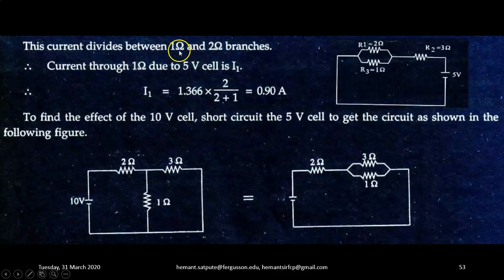Now this current divides between 1 ohm and 2 ohm branches. This parallel combination is in series with this. So current through 1 ohm due to 5 volt cell will be I1. So here I1 is equal to 1.366 into 2 upon 2 plus 1. So that comes out to be 0.90. So this is the current flowing through 1 ohm resistance due to 5 volt cell.